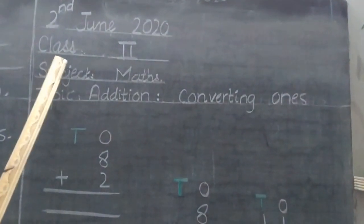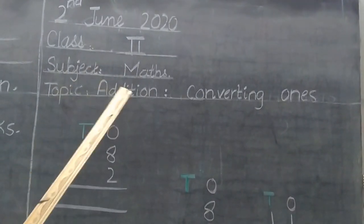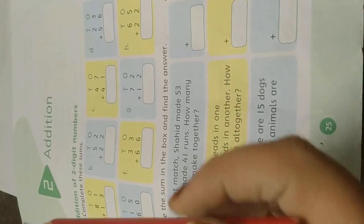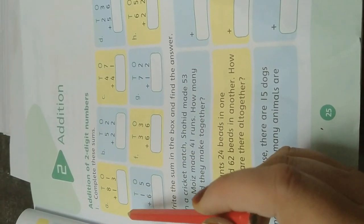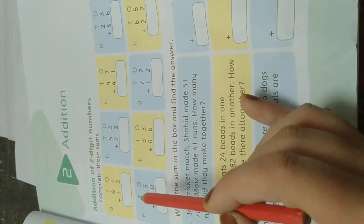Bismillahirrahmanirrahim, assalamu alaikum. This is class 2, subject maths, topic addition. Dear students, today we are going to do addition sums. Yesterday we read about addition and I did one example for you on the blackboard. I hope you understand this. Now today we are going to start in the book.